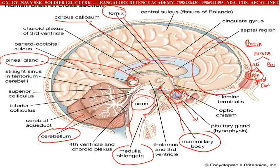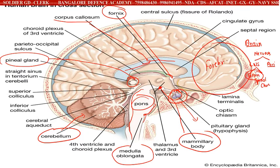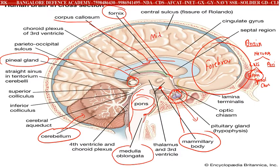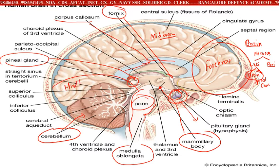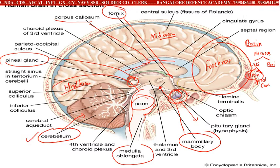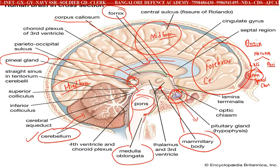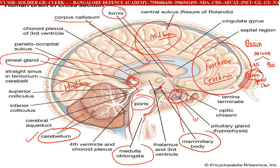The front part is called the forebrain, the middle part is called the midbrain, and at the end you have something called the hindbrain. The hindbrain consists of the cerebellum, and the forebrain consists of the cerebrum.